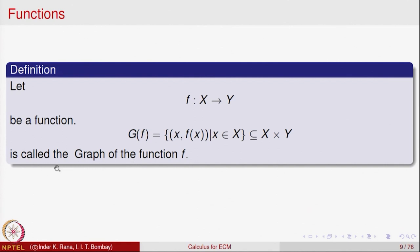Next we look at the graph of a function — a geometric representation of functions. For a function f: X → Y, the graph of f is the set of all ordered pairs {(x, f(x)) | x ∈ X}. This is a subset of X cross Y. So the graph is a subset of X cross Y and gives a visual representation of the function.